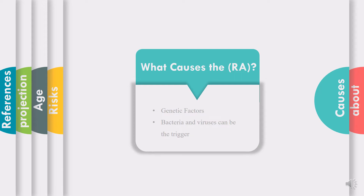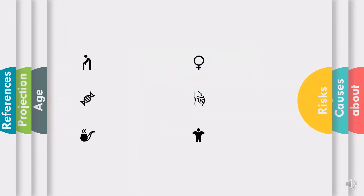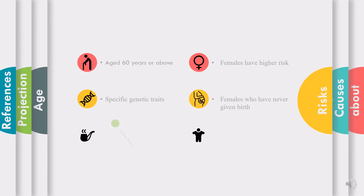Nobody knows what causes the immune system to malfunction in rheumatoid arthritis. Genetic factors are one of the causes, and bacteria and viruses can be a trigger in people who already have the genetic factors.